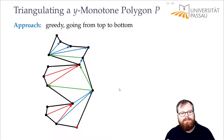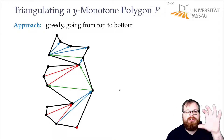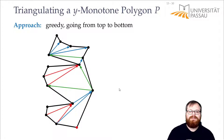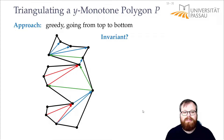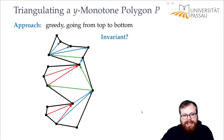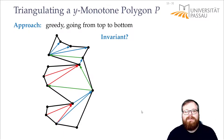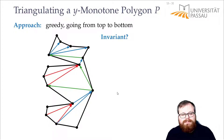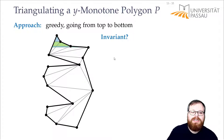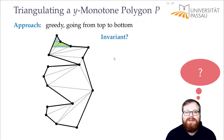This is a greedy algorithm that separates our polygon into triangulated polygons and a y-monotone polygon that's not yet triangulated. We probably want to prove correctness by induction, which means we need an invariant. What must hold true for everything we've looked at so far but not processed? What is the state of the part we've already walked through but haven't handled?